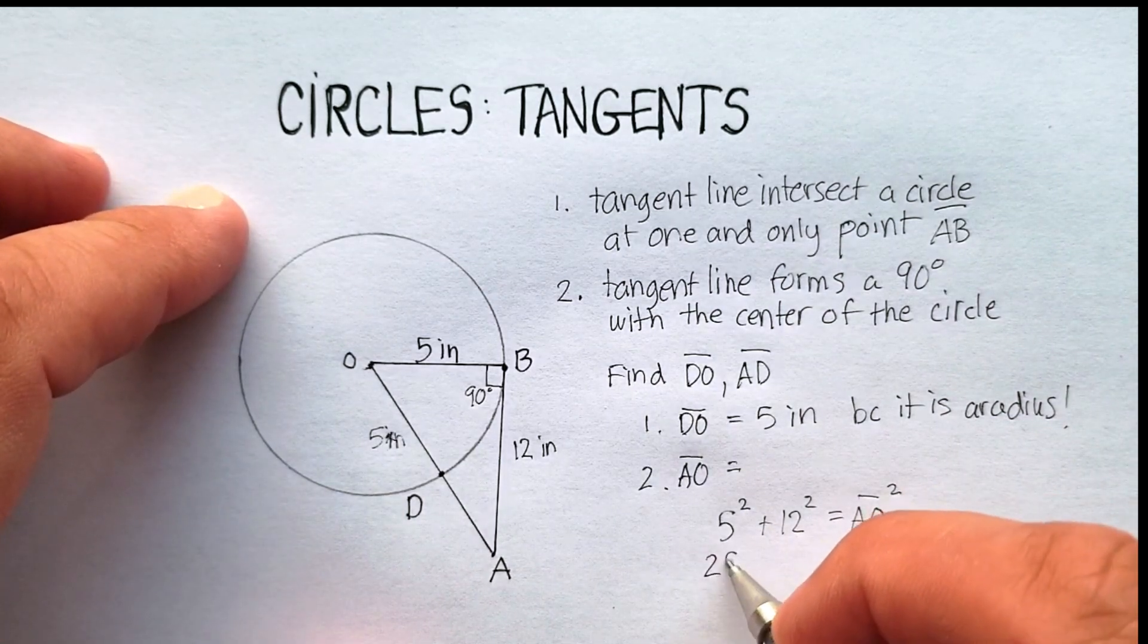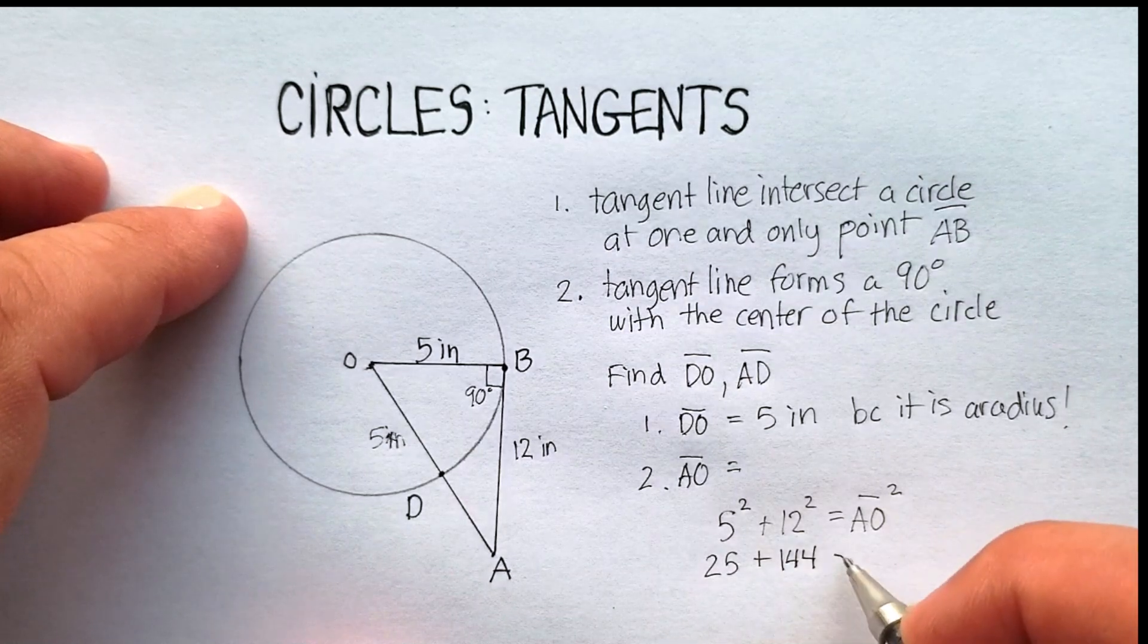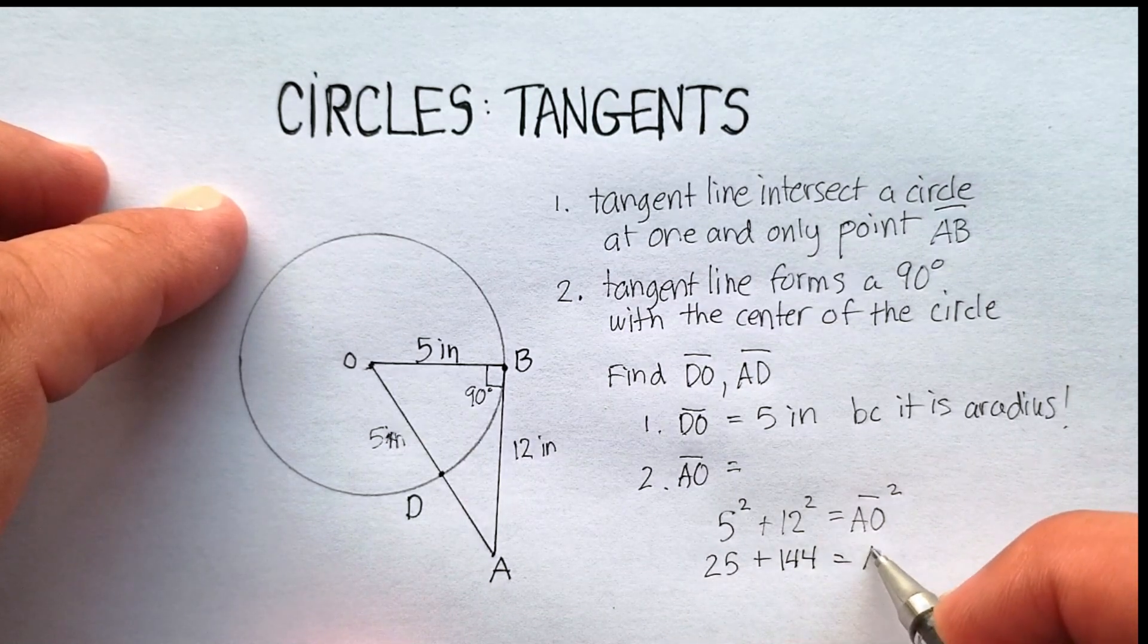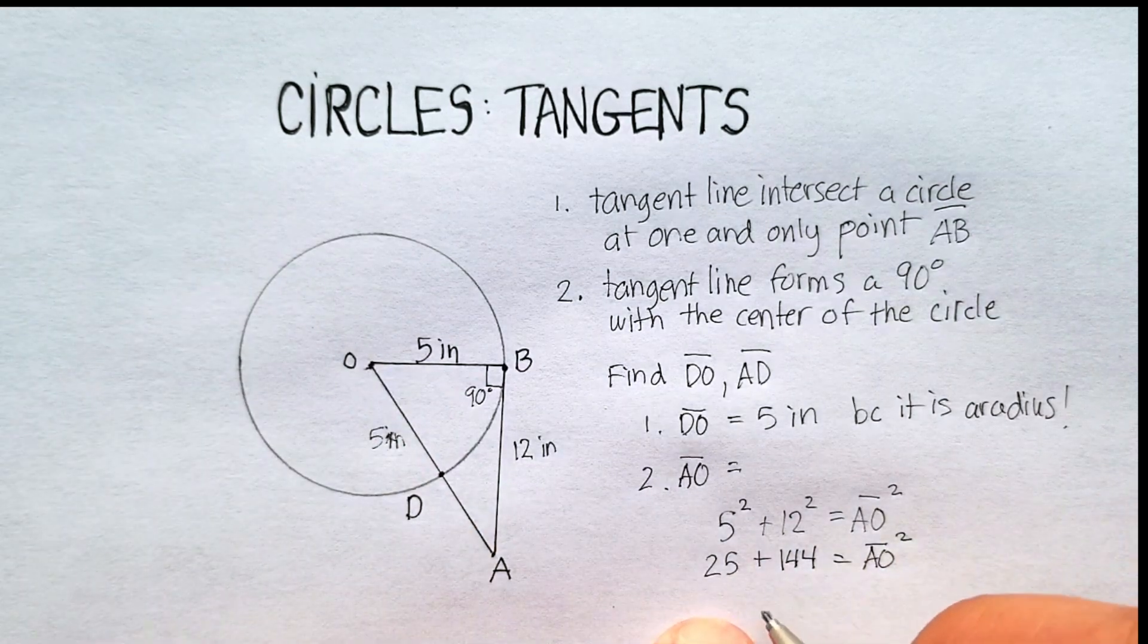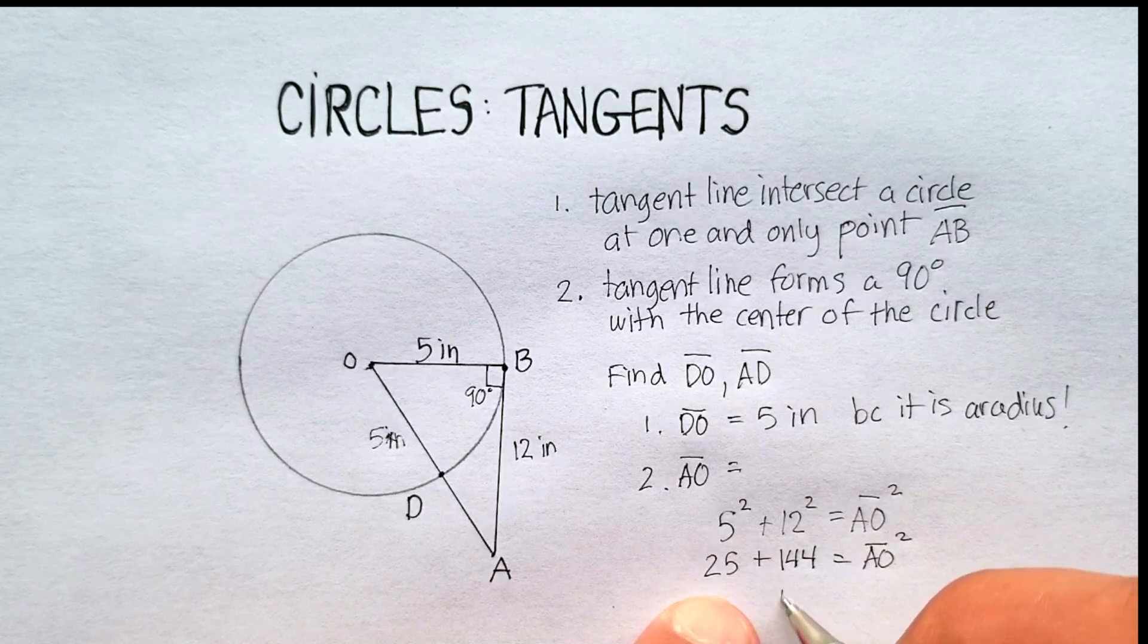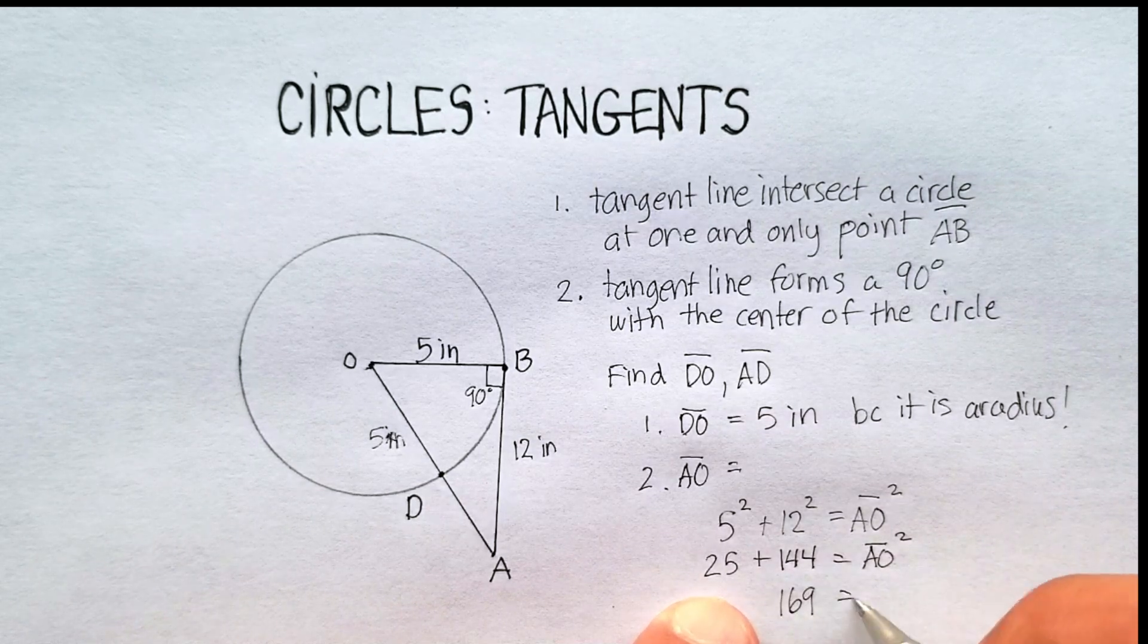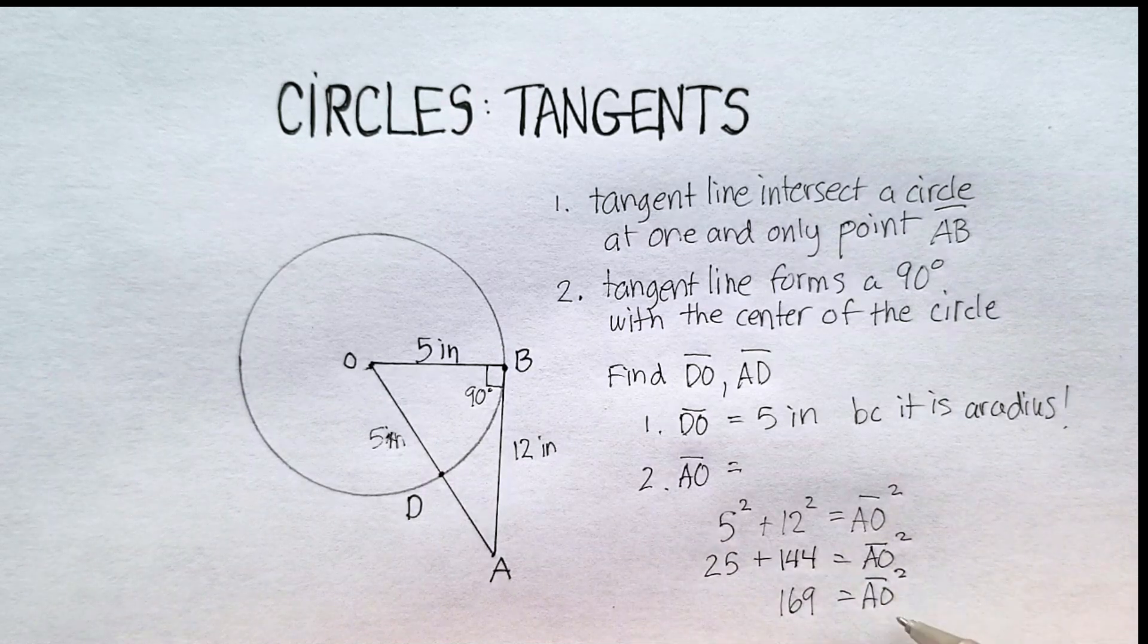We know that 5 squared is 25. We know that 12 squared is 144. And again, that's going to equal A-O line squared. This is going to give me 169.